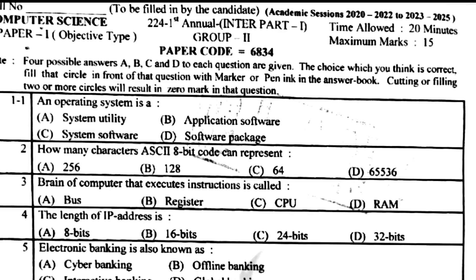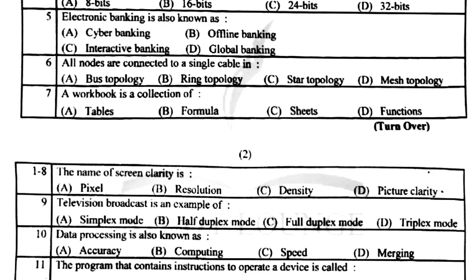An operating system is a system software. How many characters can an 8-bit code represent? 8 ki baat hori hai toh answer hoga 256. Brain of the computer that processes instructions is called CPU. The length of an IP address is 32-bit. Electronic banking is also known as cyber banking.